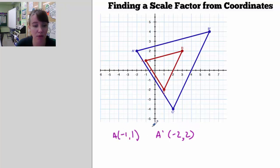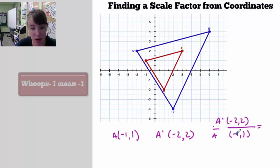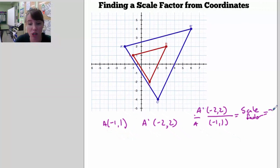So what I can notice here is that from going from the X coordinate of A to the X coordinate of A prime. So if I take A prime and I take its coordinates and I divide it by A's coordinates, essentially what I will get is the scale factor. So negative 2 divided by negative 1 gets you 2, and 2 divided by 1 gets you 2. So I know my scale factor is equal to 2.